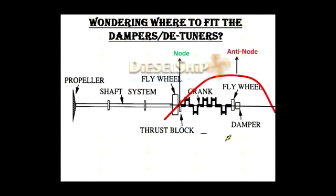You must be wondering where to fit the dampers and detuners. Looking at the shafting diagram once again: the vibration curve is shown with the red line, and the thrust block is located at the node or near-node. In the same manner, the vibration curve rises, and the damper is fitted at the anti-node or near anti-nodal point wherever possible.